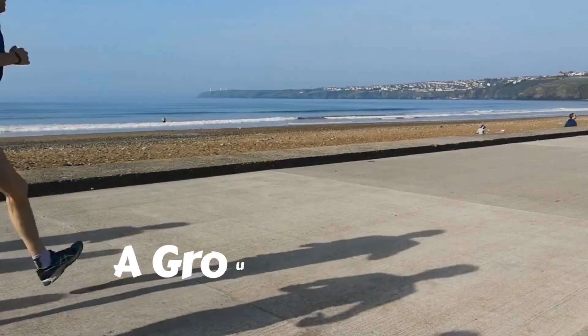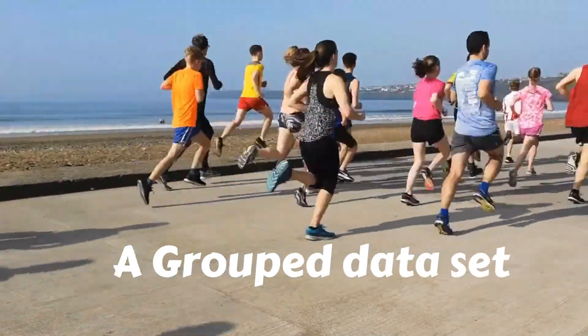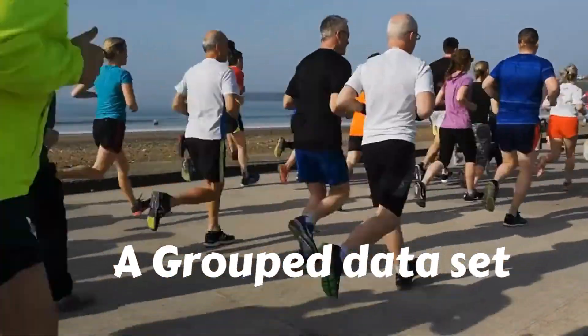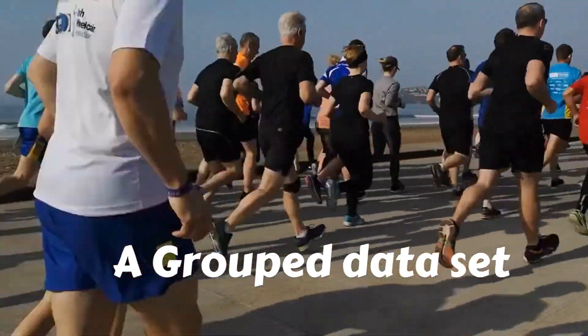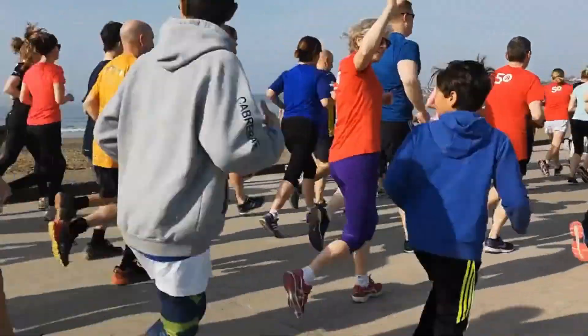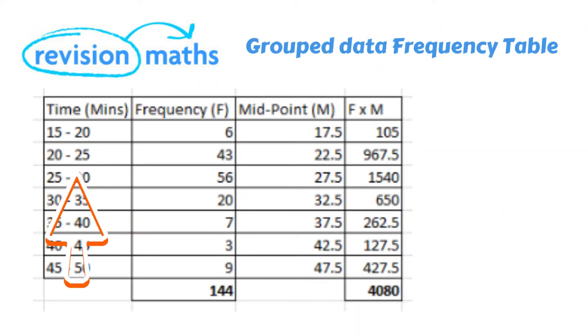So now let's take a different example this time using a grouped data set. In this case 144 runners took part in their local 5k Saturday morning park run. On the screen we can now see the frequency table showing the runner's times.